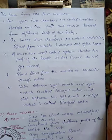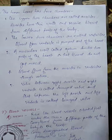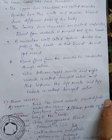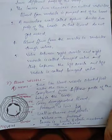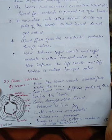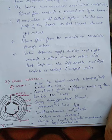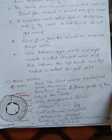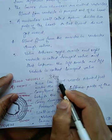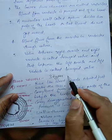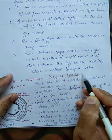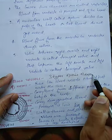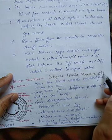The second component of the circulatory system is blood vessels. Blood vessels are tube-like structures that play a major role in the circulation of blood. Blood vessels are of three types: veins, arteries, and capillaries.